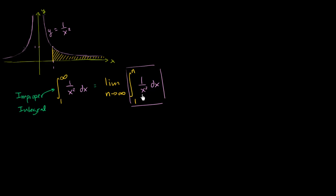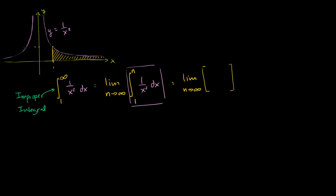So let's figure out if we can actually evaluate this thing. The second fundamental theorem of calculus tells us we're going to evaluate the antiderivative of 1 over x squared, or x to the negative 2. The antiderivative of x to the negative 2 is negative x to the negative 1, or negative 1 over x. So negative 1 over x is the antiderivative, and we're going to evaluate it at n and at 1.